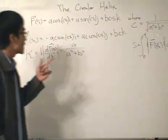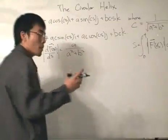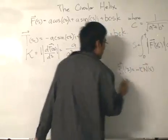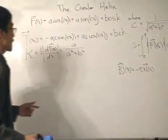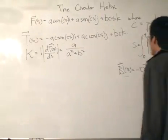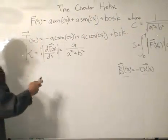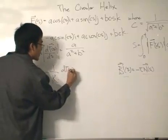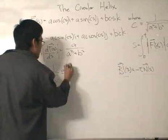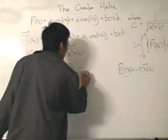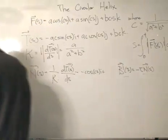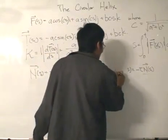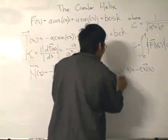The next thing we want to find is the torsion. Remember the formula: the first derivative of the binormal vector equals minus torsion times the unit normal vector. To find torsion we need the binormal vector and the unit normal vector. The unit normal vector N is defined as (1/κ) times the first derivative of the unit tangent vector, which gives: N = −cos(cs) i − sin(cs) j.